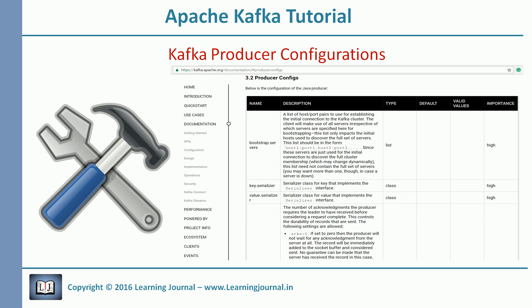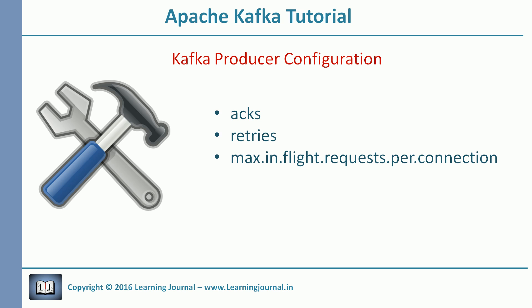I will cover three important parameters in this session because they have a direct impact on the reliability and performance of Kafka. Remember that these are producer configurations, so you can set these configurations using properties just like you set bootstrap server or partitioner class. The effect of setting these properties is at the producer level, not at the topic level or server level.